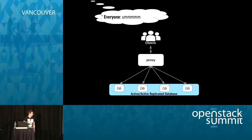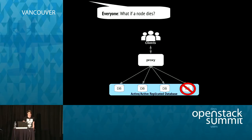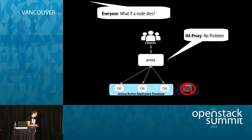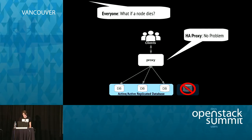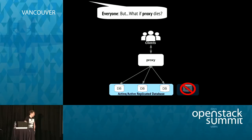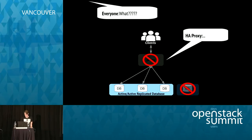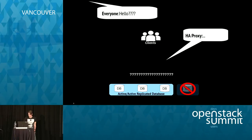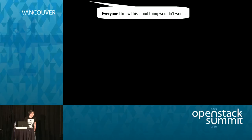But then everyone started thinking again: what happens if a database node dies? Does that mean some client requests aren't getting processed? HAProxy said no problem — it can monitor for unresponsive database instances and route traffic to the remaining ones. But everyone wasn't quite convinced, and they asked another question.